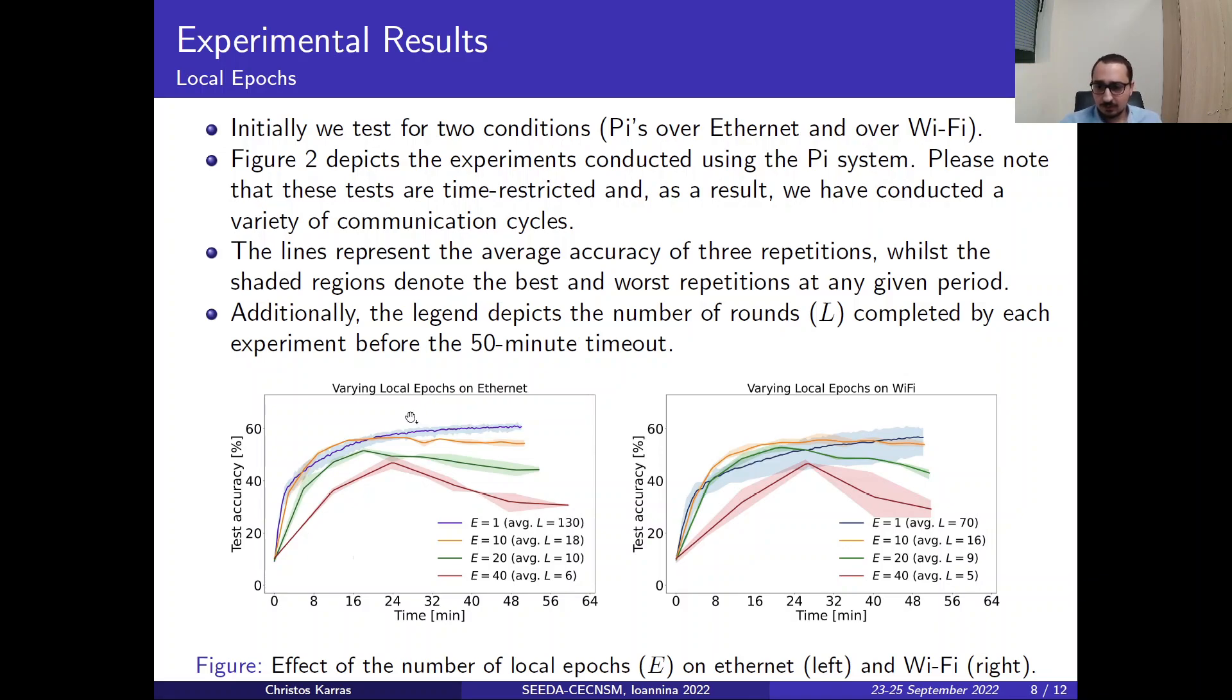As we can observe from the figure here on the left-hand side, we can observe that one full epoch with many communication rounds has the highest performance across the other three experiments, where it peaked at 60 percentage accuracy.